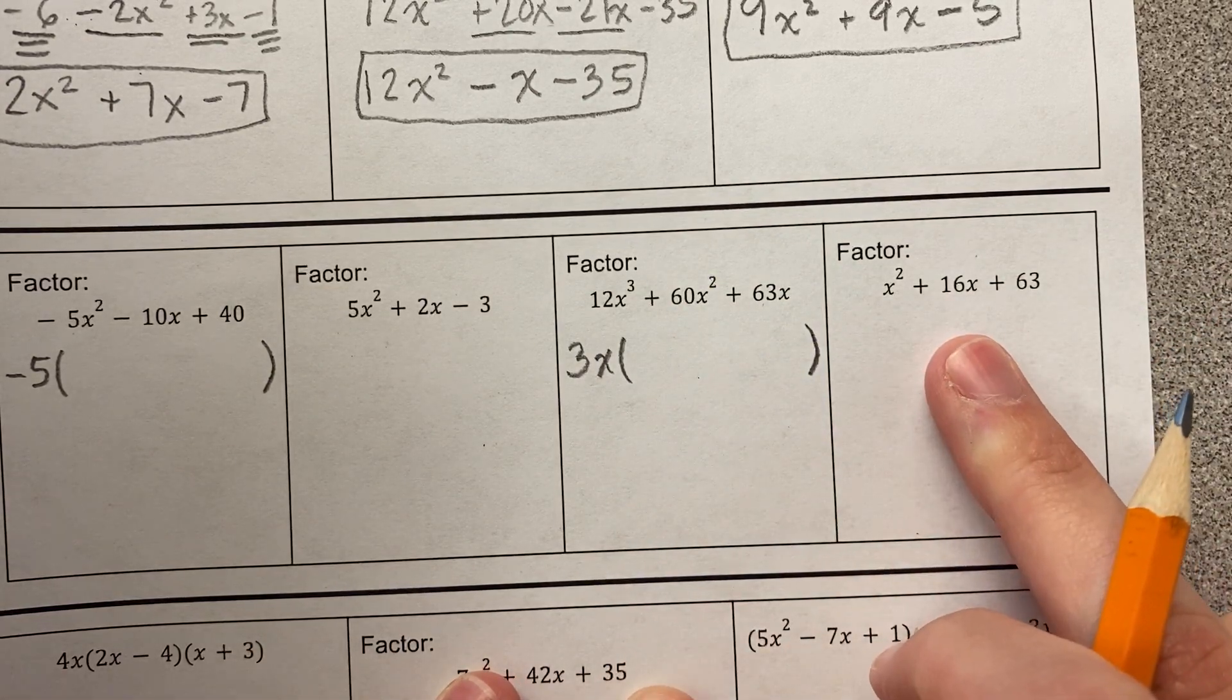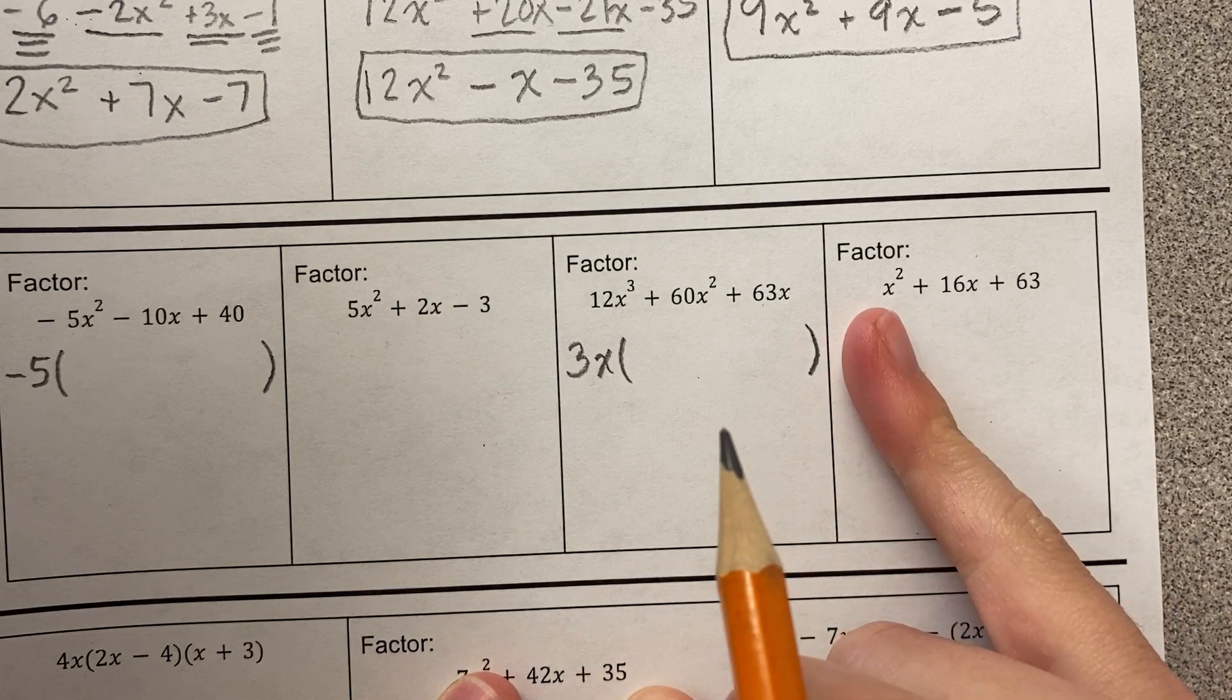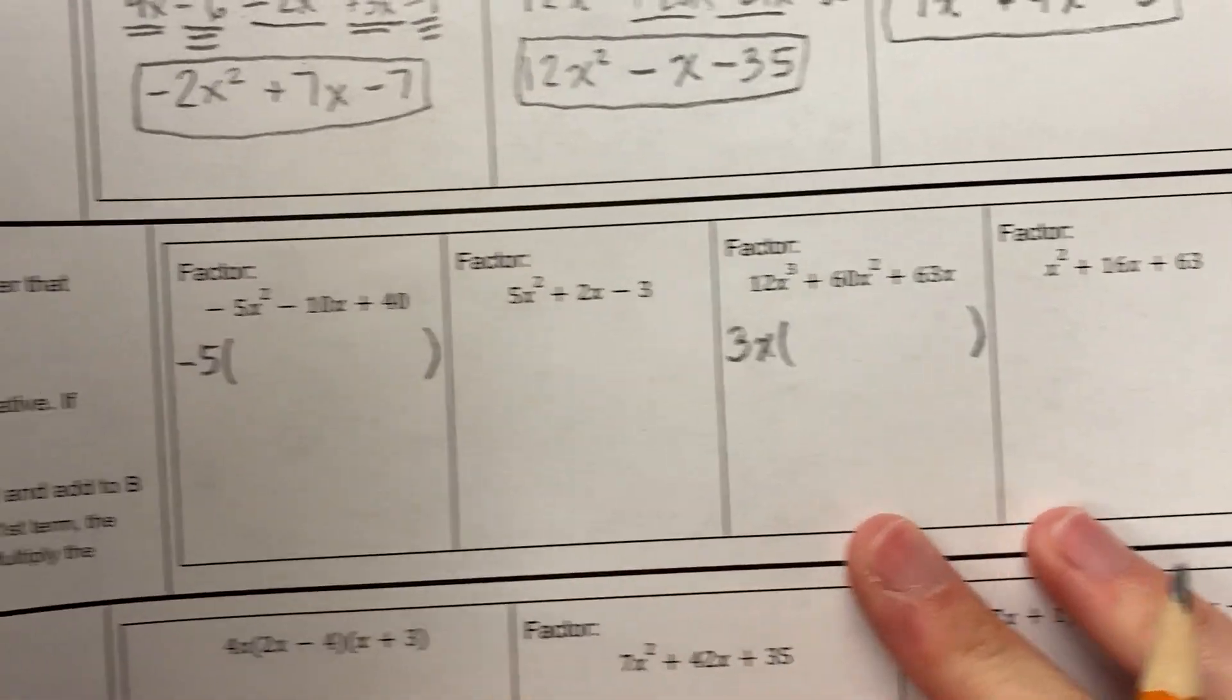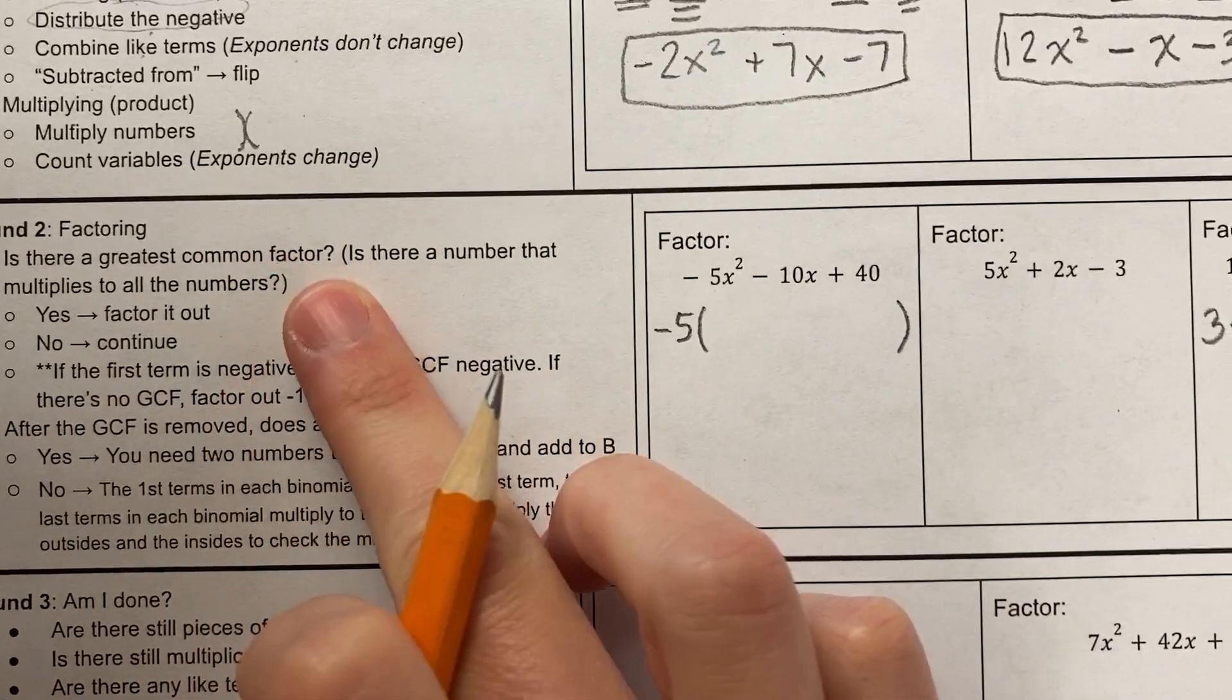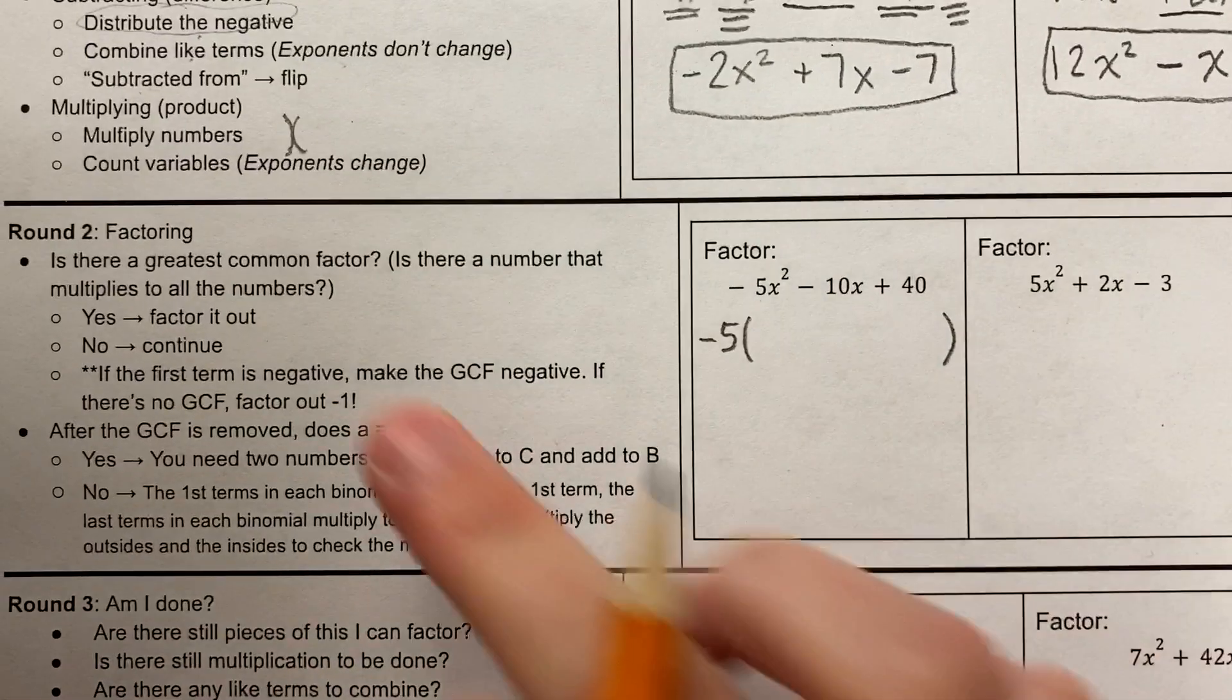Does this one have a GCF? Nope, I got that nice pretty x squared right out in front. This one does not have a GCF. So notice first I'm asking myself, if I'm getting a factoring problem, does it have a GCF?